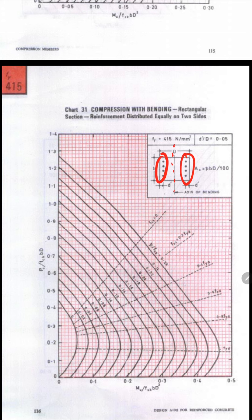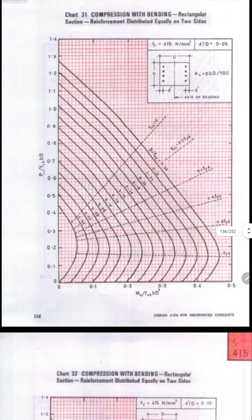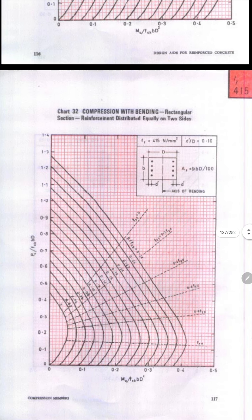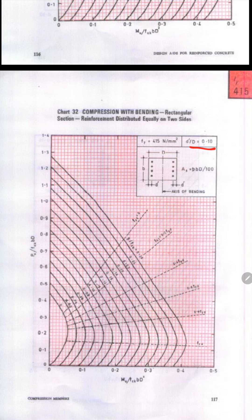Here d is divided and reinforcement is provided on either side. In the next chart, Fe 415 with d'/d = 0.1, the reinforcement is also distributed on two sides. You always need to check these three parameters: which grade of steel you are going to use, what is the d'/d ratio, and whether reinforcement is on two sides or four sides.